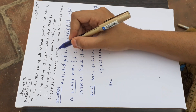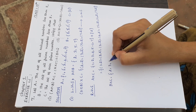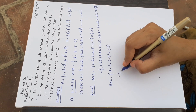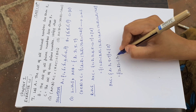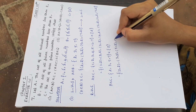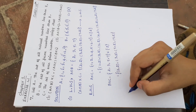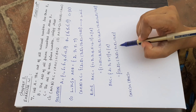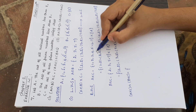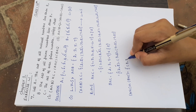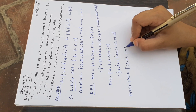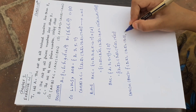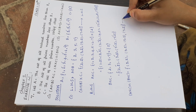Now find B×C. B = {2, 3, 5, 7} cross C = {2}. So we get: (2,2), (3,2), (5,2), (7,2). This is B×C. Now find (A×C) ∩ (B×C) — the common elements between A×C and B×C. The result is our right-hand side.